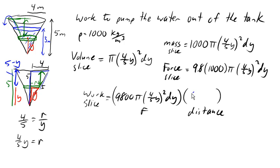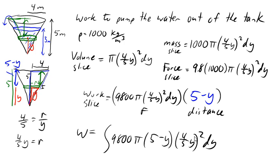We want to be consistent here in how we're using the variable Y. So to find the total work now, we just integrate 9,800 times pi times 5 minus Y. I'm just rearranging the terms here a little bit. 4 fifths Y squared dy from the bottom of the tank to the top of the water level. So to a Y value of 3.